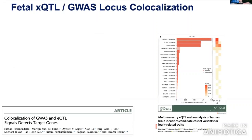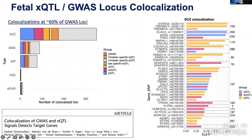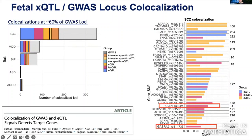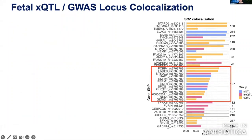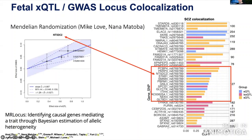Moving from the big picture to individual loci, using our fetal brain atlas we now identify significant co-localizations at more than 60% of schizophrenia GWAS loci — up from only 25% previously with larger adult brain panels — really highlighting the importance of developmental context. We can recover previously experimentally validated variants and gene effects, such as furin, as well as new targets like GABA-A receptors.